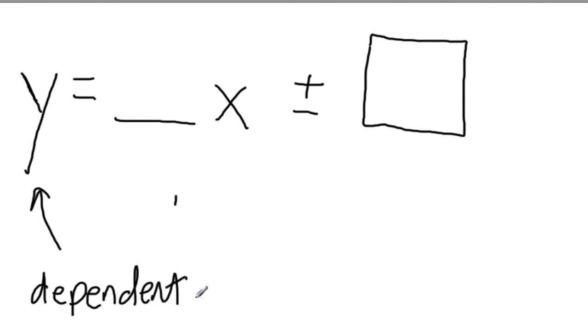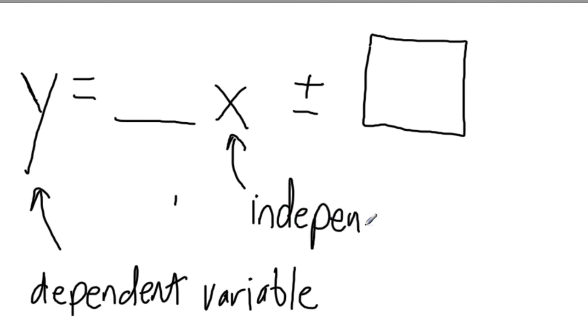Dependent variable is something talked about a lot in science and math. It's something that depends on the, in this case, x value, which is the independent variable.